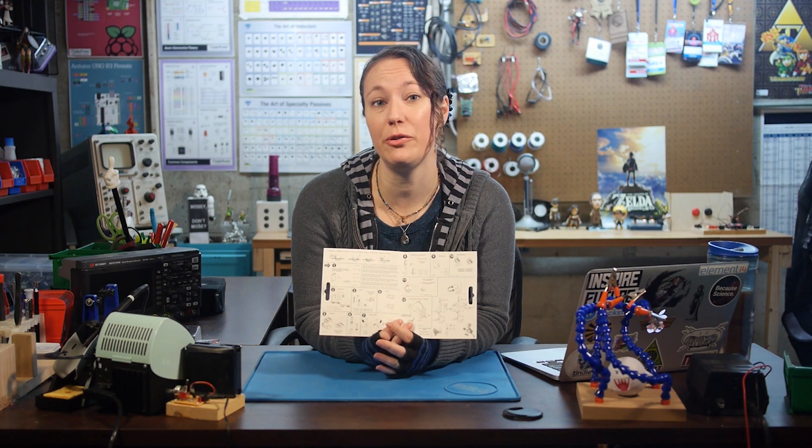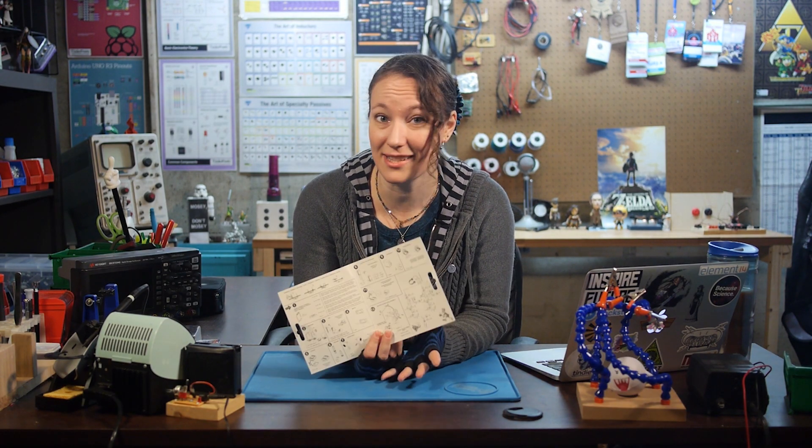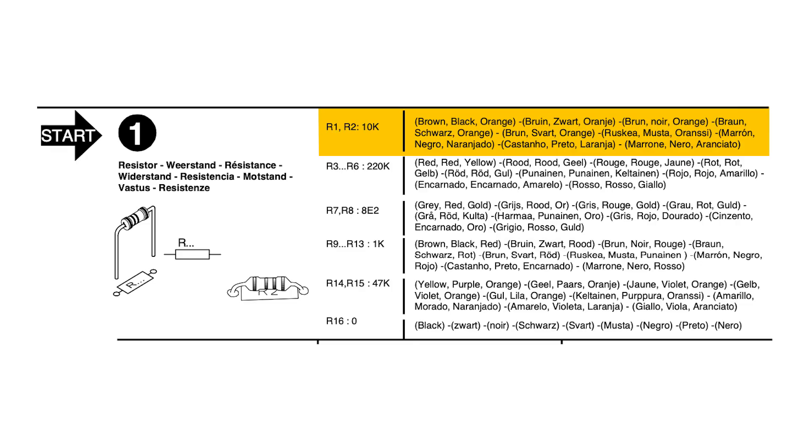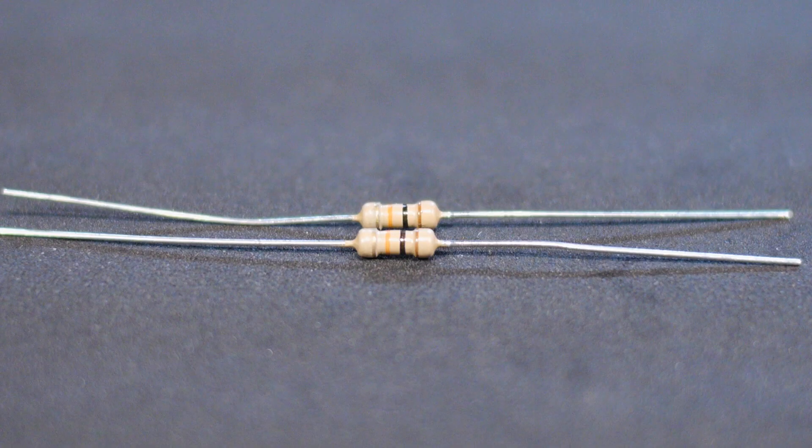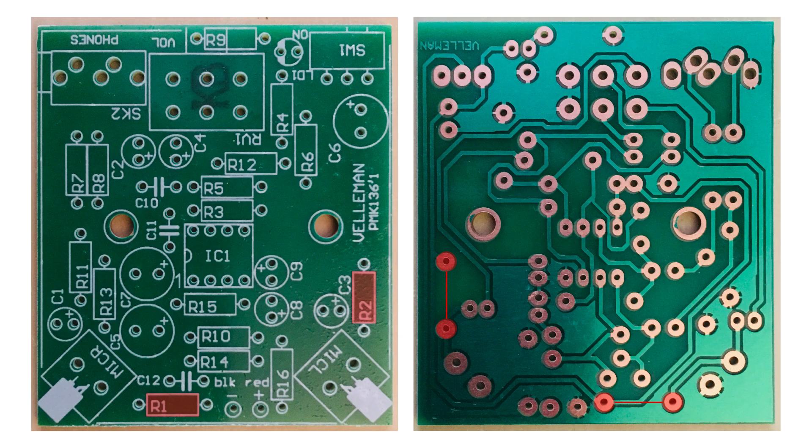These Velamin kits always tell you the order for assembly, so let's get started. As usual we start with the lowest profile components and work up to the tallest. Step one is to solder all the resistors. Start by finding the two loose 10k ohm resistors: brown, black, orange. And place them in R1 and R2.